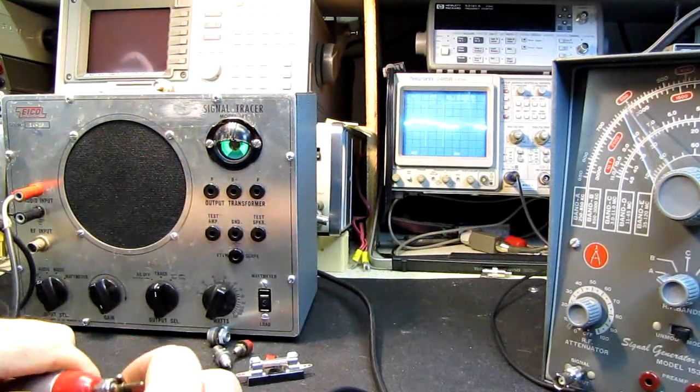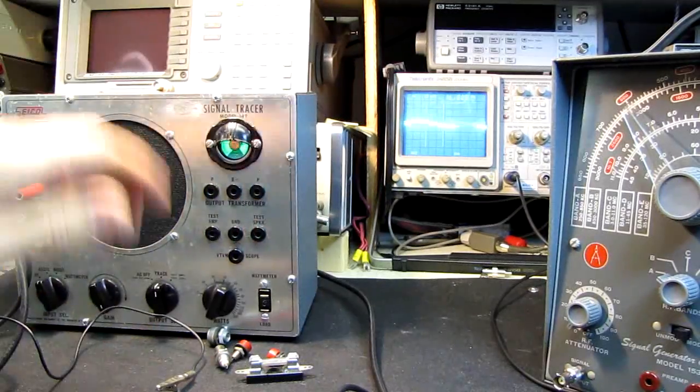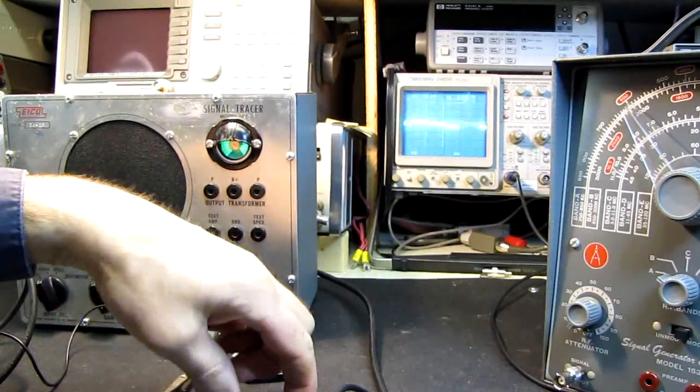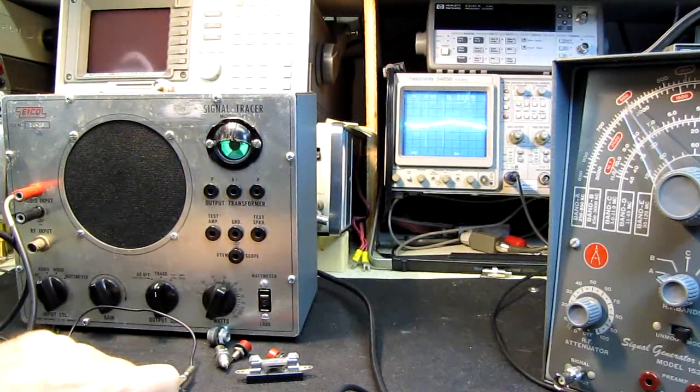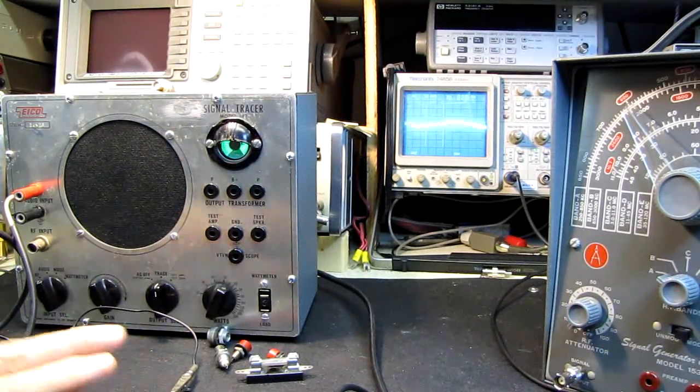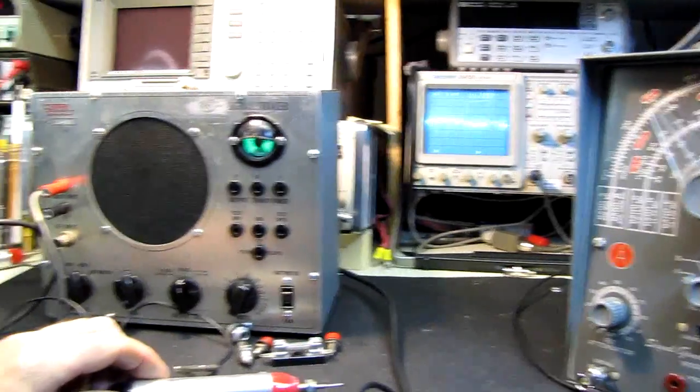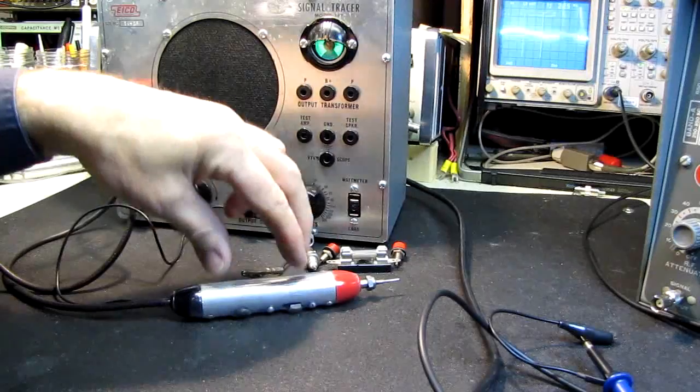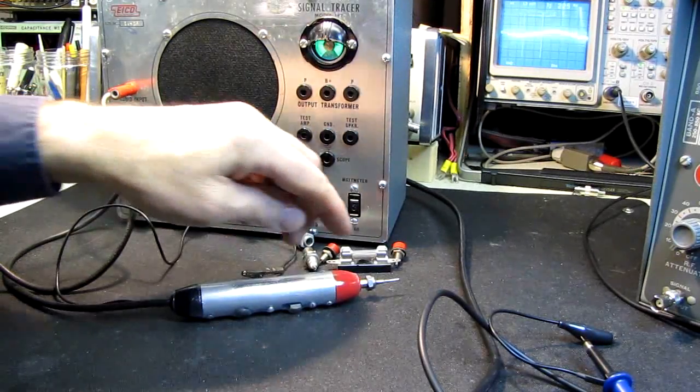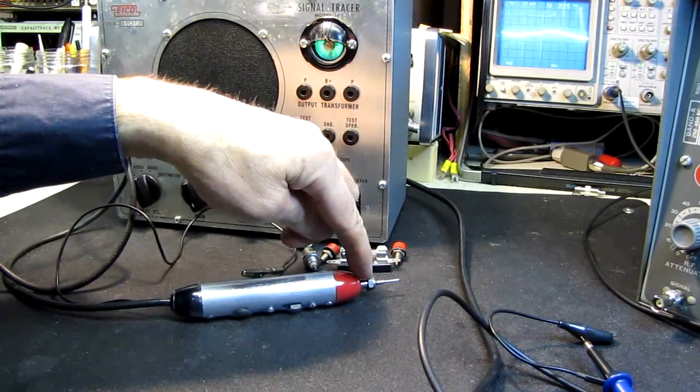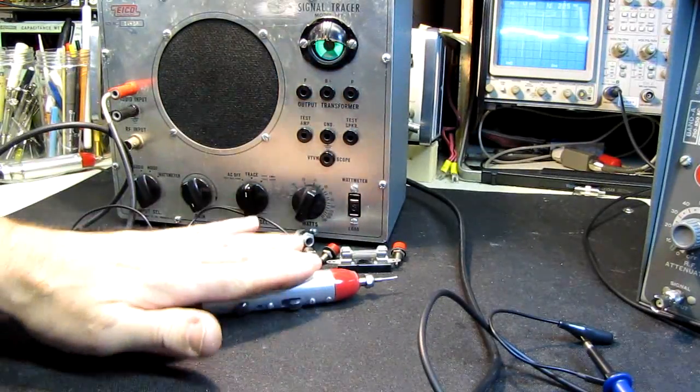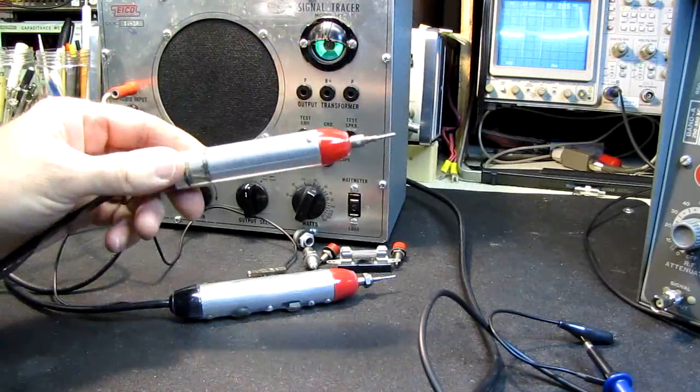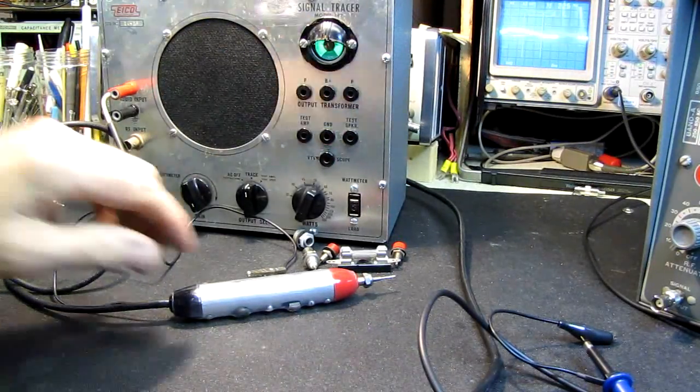No AC hum pickup from the probe anymore. It used to be if I picked it up, especially with the ground lead off, you can see I'm making virtually no difference. Everything you're hearing is what's being picked up by the probe extension. Touching this no longer affects it. Touching this no longer affects it. It used to be if I touched this, the hum amplitude would go up like that. Now it's no longer affected by my hand, nor is this one, because they're properly grounded and shielded.